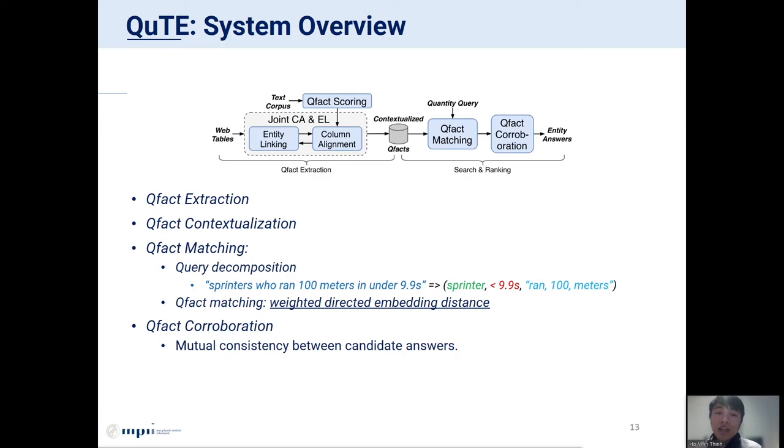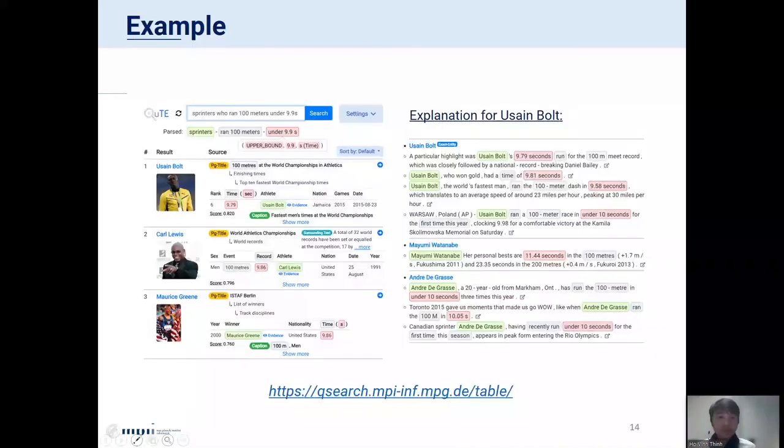Because due to time constraints, we refer to our original paper for more detail about these steps. This is the output of our system for a sample query. You can see that our search system returns entity results, along with text evidence for the column alignment. You can also see that because of the contextualization step, we are able to capture the context tokens 100 meters, which is outside of the table, like in the page title, the same row cell, or in the table caption.